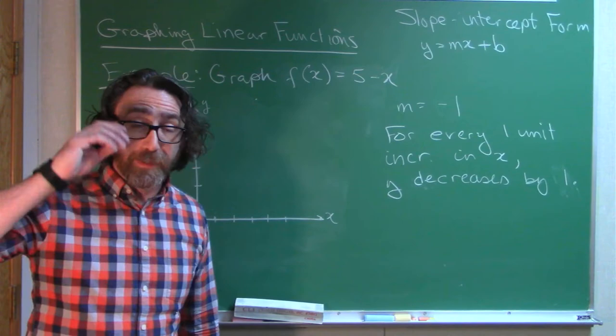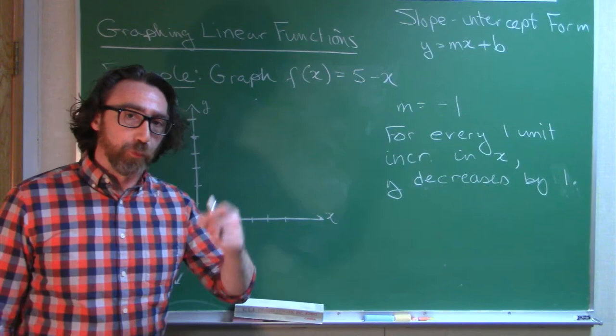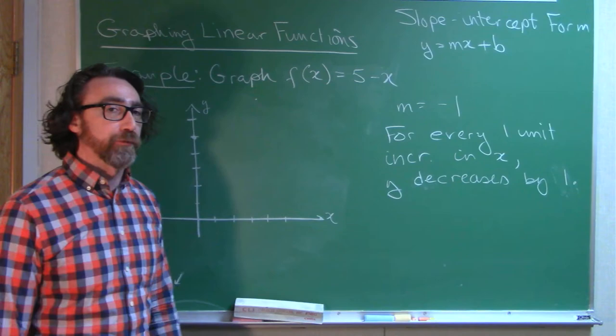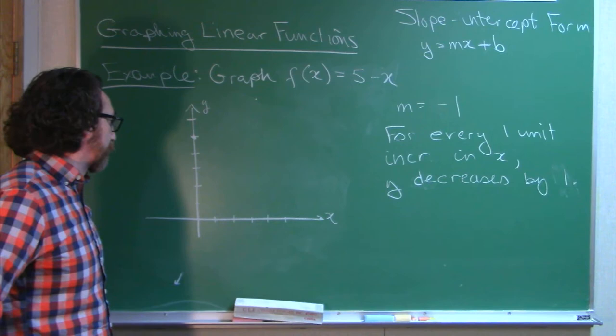You can probably get this from the context, but the intercepts of a graph are places where the graph crosses the axis, the coordinate axes. The y-intercepts are where the graph crosses the y-axis. The x-intercepts are where the graph crosses the x-axis. That is the y-intercept. In this case, b is 5.